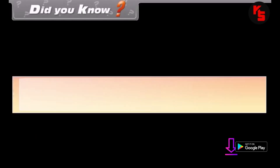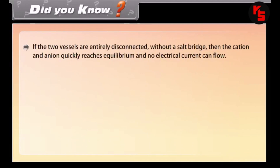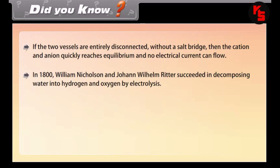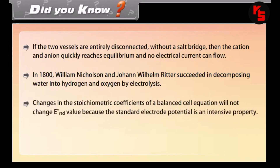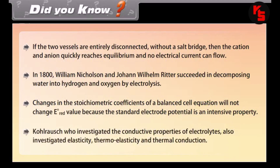Did you know? If the two vessels are entirely disconnected without a salt bridge, then the cations and anions quickly reach equilibrium and no electrical current can flow. In 1800, William Nicholson and Johann Wilhelm Ritter succeeded in decomposing water into hydrogen and oxygen by electrolysis. Changes in the stoichiometric coefficients of a balanced cell equation will not change the E° value, because the standard electrode potential is an intensive property. Kohlrausch, who investigated the conductive properties of electrolytes, also investigated elasticity, thermoelasticity, and thermal conduction.